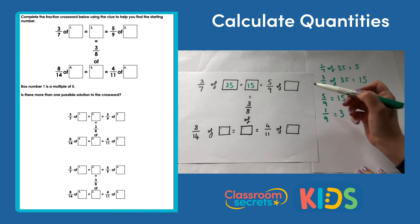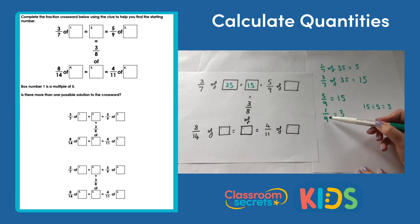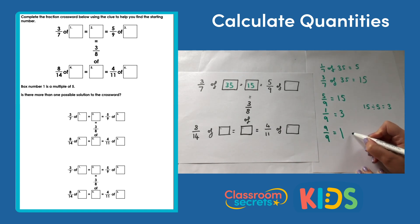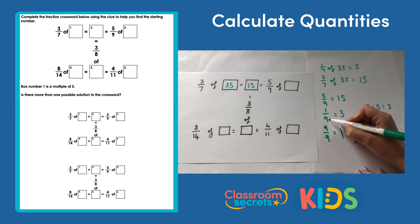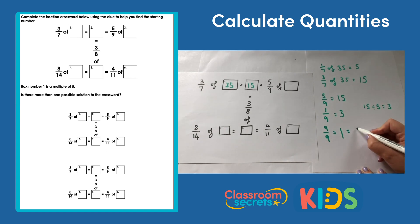15 divided by five is three, so one ninth equals three. But we want the whole amount, which is nine ninths. So we multiply three by nine, which gives us 27.